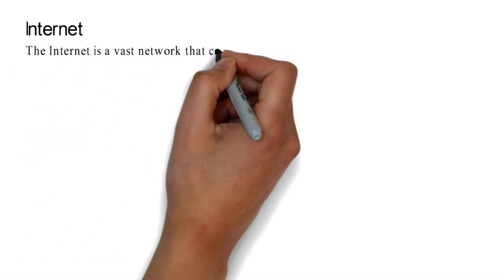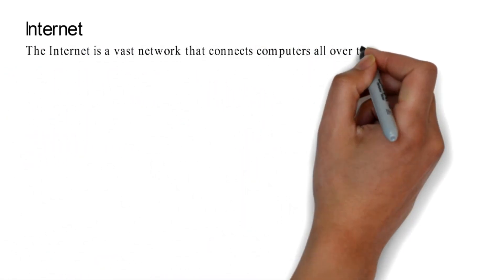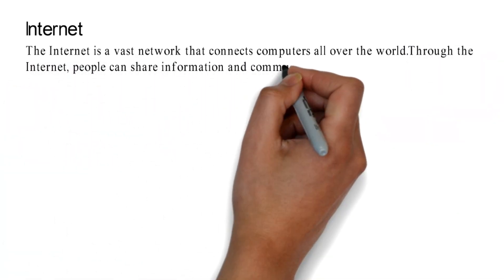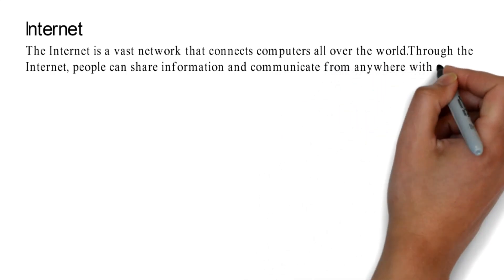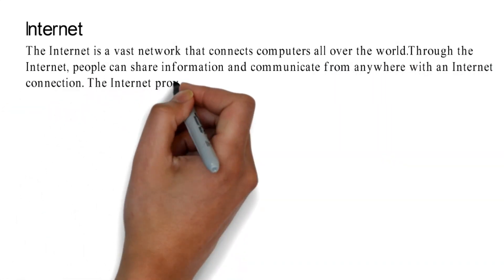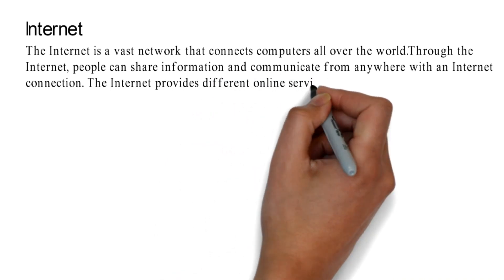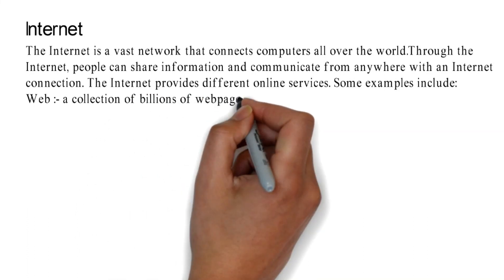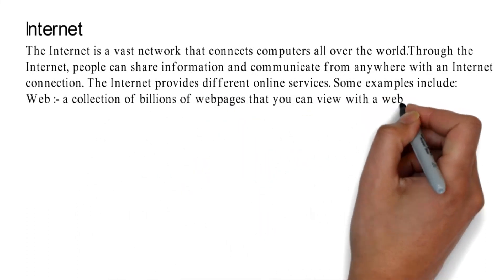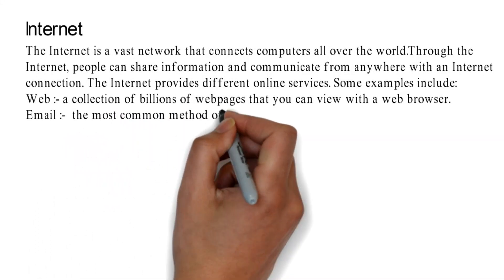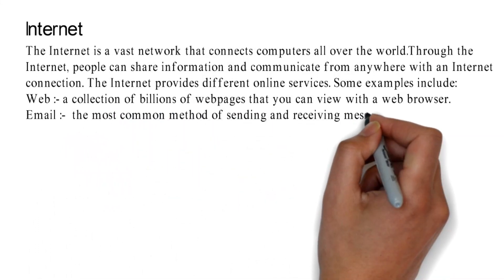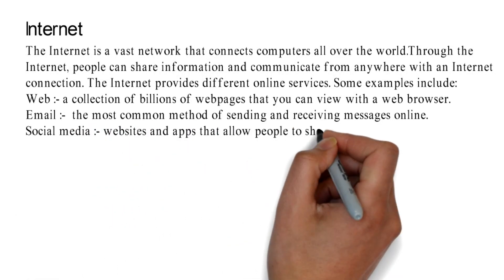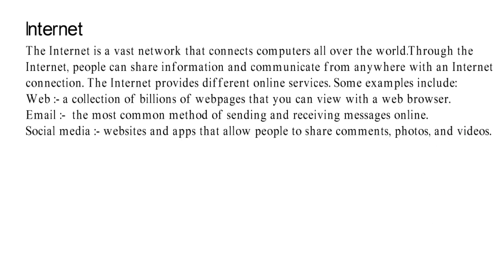The internet is a network that connects computers all over the world. Through the internet, people can share information and communicate from anywhere with an internet connection. The internet provides different online services. Some examples include: Web — a collection of billions of web pages that you can view with a web browser; Email — the most common method of sending and receiving messages online; Social media — websites and apps that allow people to share comments, photos, and videos.